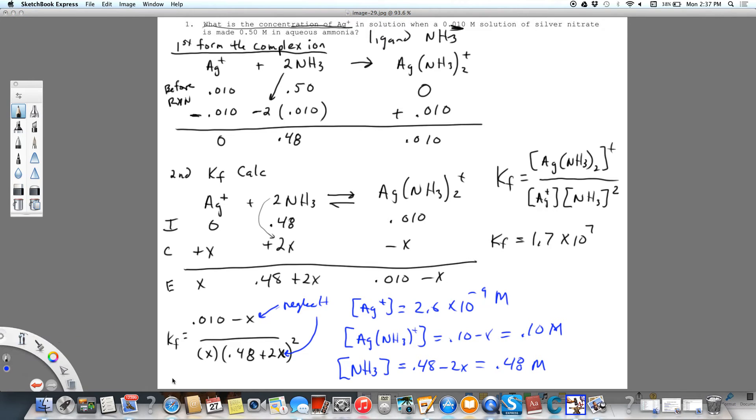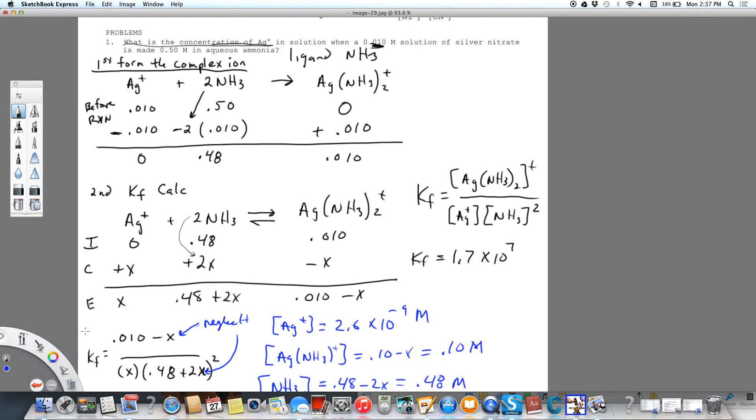So if we were to look at the percent x, could we in fact then neglect x? So if we take 2.69 times 10 to the minus 9 molar, that's going to be the x that we found, divided by our original concentration of 0.010 molar times 100 we get a very small number and that turns out to be 2.69 times 10 to the minus 5th percent, which is way less than 5 percent. So we can neglect x.